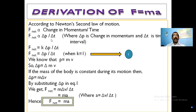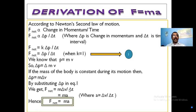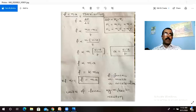So F net force is equal to delta p by delta t. Introducing a constant k, F = k times delta p by delta t. We know that momentum p = mv, so delta p = m times delta v. Substituting, F net = m times delta v by delta t. Since delta v by delta t is acceleration, F = ma. Derivation complete.